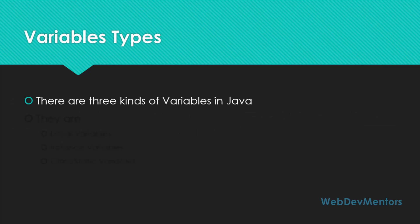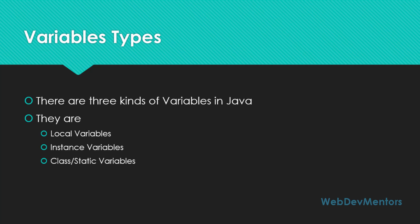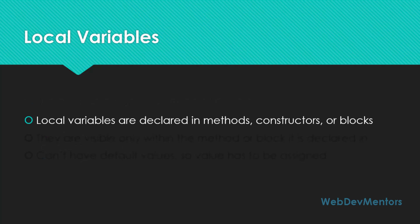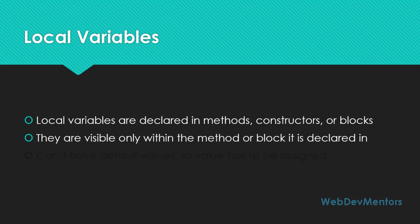There are three variable types in Java: local variables, instance variables, and class or static variables. Local variables are declared in methods, constructors, or blocks of code. These local variables are visible only within the method or the block within which they are declared. If you want to use that local variable outside of that block or method, it will not be available and will give you an error.